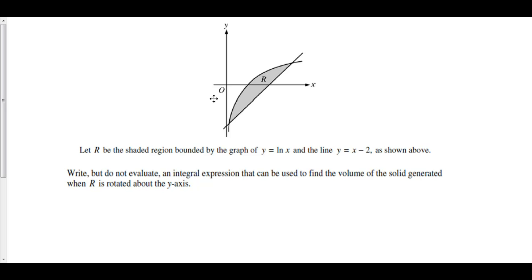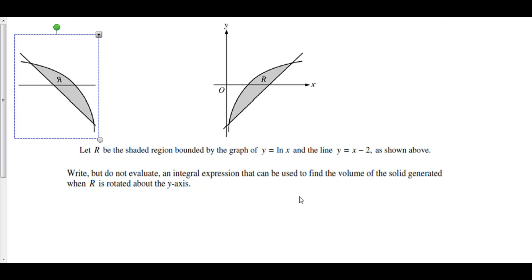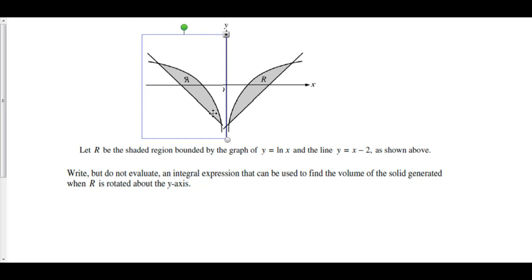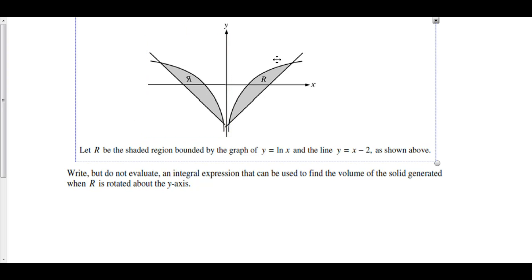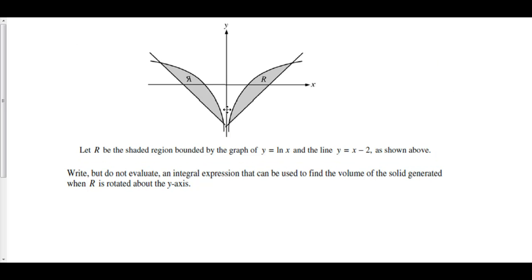Here we are rotating R about the y-axis. That means that we have to integrate with respect to y. Let's make a picture of what is actually going on here. So I've flipped R about the y-axis. Now we have space in between our axis of revolution and the region itself, which means that we're going to have to use the washer method here.